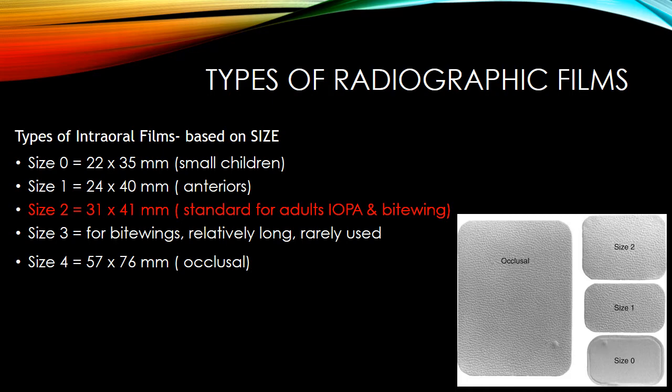Speed F film is the latest speed that film development has evolved to — ultra ektaspeed. However, this transition of development in film speed has come to a halt almost entirely because of the advent of digital radiography.